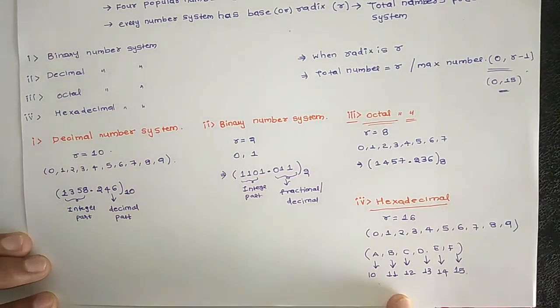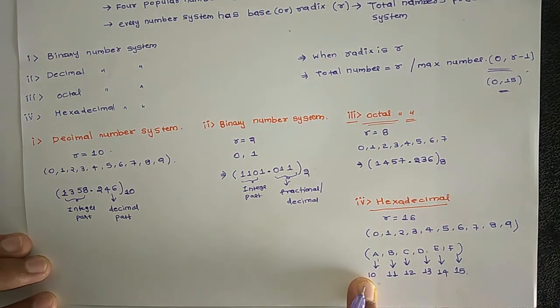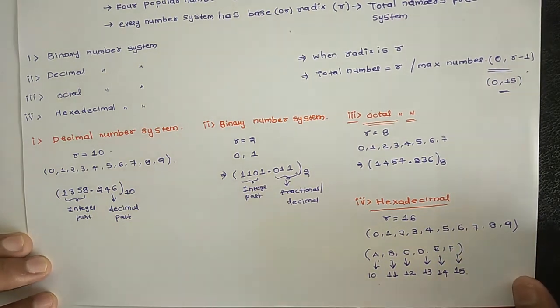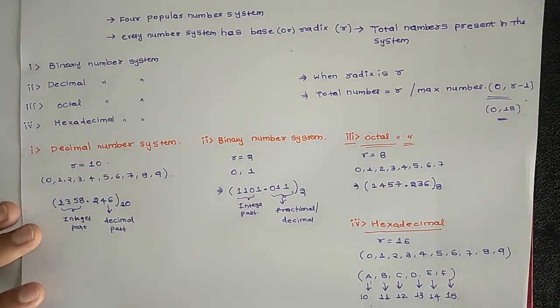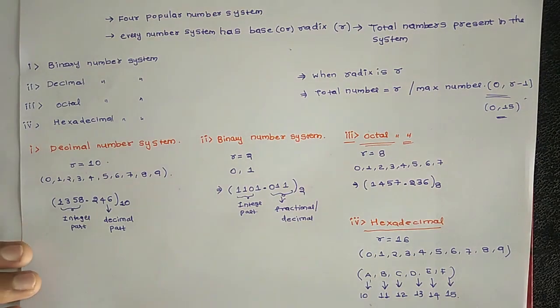In the next video, we will discuss number system conversion. But remember this: A when converted to decimal is 10, B is 11, C is 12 and so on, F is 15. This is the basics of number system. In the next video, we will discuss about weights. Watch that next video. Thank you.